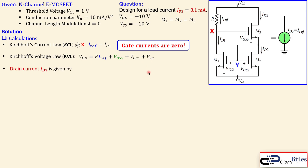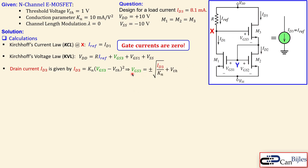Now we write an expression for ID3, which is our target drain current, given by the saturation region formula. We have the threshold voltage, the conduction parameter, and VGS3 in this expression. Since we know what ID3 must be, we can rearrange to express the required gate-to-source voltage VGS3.